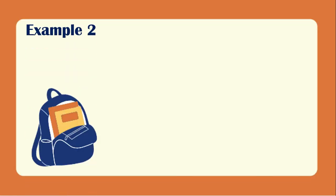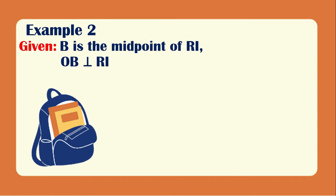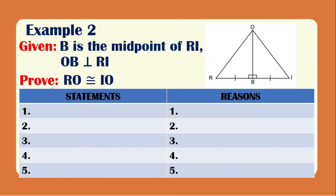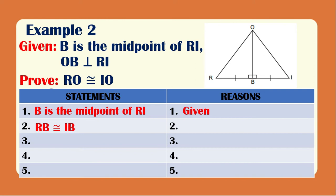Example number two. Our givens are: B is the midpoint of RI, and OB is perpendicular to RI. This is the illustration with the givens already marked. We need to prove that RO is congruent to IO. For our two-column proof: statement one, B is the midpoint of RI, reason is given. Statement two, RB is congruent to IB, because the midpoint divides the segment into two congruent parts — definition of midpoint.